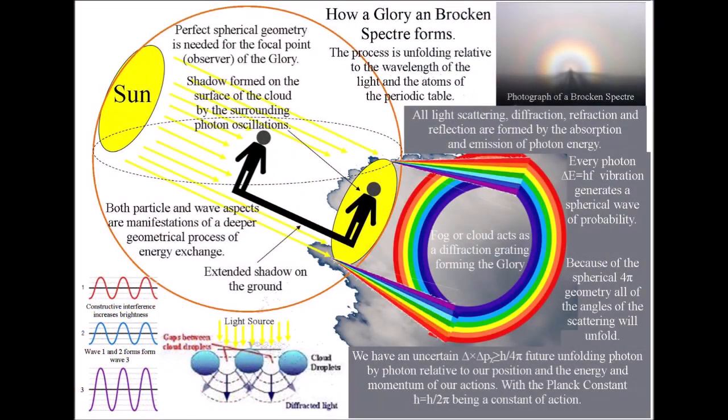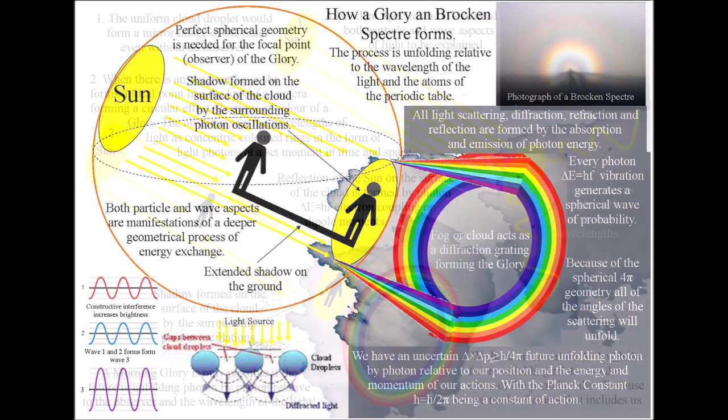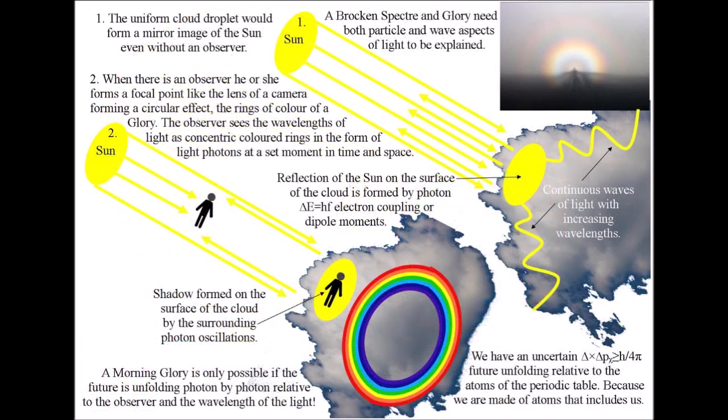This diagram explains how a glory and brocken spectre forms. The process is unfolding relative to the wavelengths of the light and the atoms of the periodic table. We have spherical geometry, with the observer being the focal point. This is formed by photon vibrations, generating spherical waves of probability.